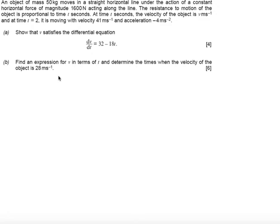An object of mass 50 kilograms moves in a straight horizontal line under the action of a constant horizontal force of magnitude 1,600 newtons acting along the line. The resistance to motion of the object is proportional to the time t seconds. At time t seconds, the velocity of the object is v meters a second, and at time t equals 2, it is moving with velocity 41 meters a second with an acceleration of minus 4 meters a second squared.